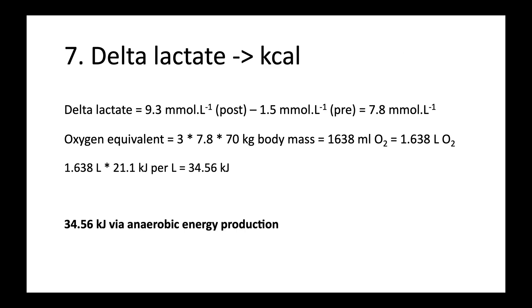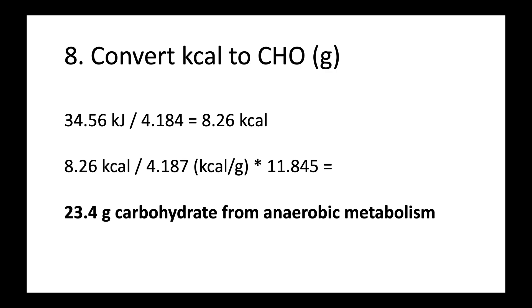Okay, almost there. Now onto the anaerobic portion. We first take the delta lactate, so the post minus pre-exercise values, and convert to kilojoules. So if we end the workout at 9.3 millimolars of lactate, and we started at 1.5, that means there's a difference of 7.8. We multiply 3 times that delta, so 3 times 7.8, times body mass, and that gives us 1,638 milliliters of oxygen. We know that it's 21.1 kilojoules per liter of oxygen, so that gets us to 34.56 kilojoules produced via the anaerobic energy production. Now remember that's work. We want to convert kilojoules to calories, so we do that by dividing by 4.184 to go from kilojoules to calories. Then we divide by 4.187 calories per grams of carbohydrate, and then importantly, we multiply by our inefficiency factor to get the carbs needed to create that given amount of energy we've used. So that gets us to 23.4 grams of carbohydrate from anaerobic metabolism. And again, that's for the entire workout.